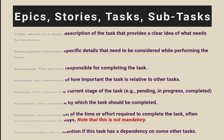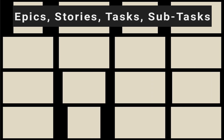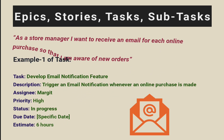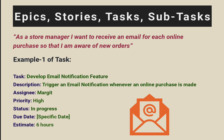Let's look into examples for the user story we discussed earlier — as a store manager, I want to receive an email for each online purchase so that I am aware of the new orders. The first example task is: develop email notification feature. Description: implement the backend functionality to trigger an email notification whenever an online purchase is made. Assignee: Mark. Priority: high. Status: in progress. Due date: a specific date. Estimate: 6 hours.